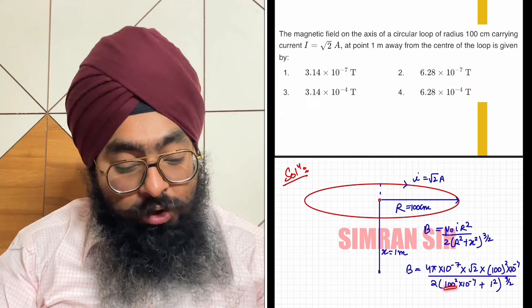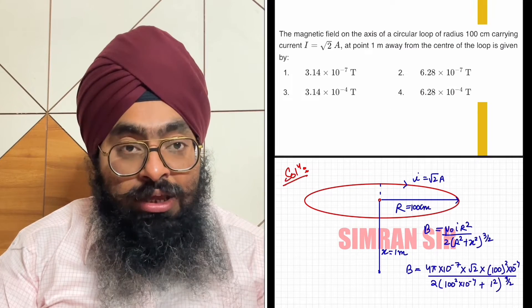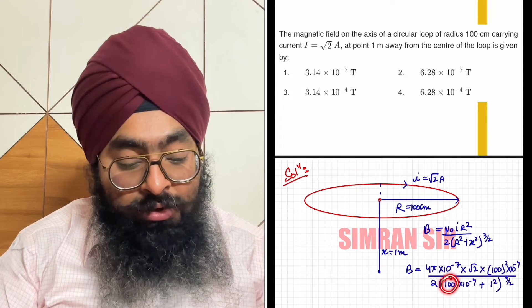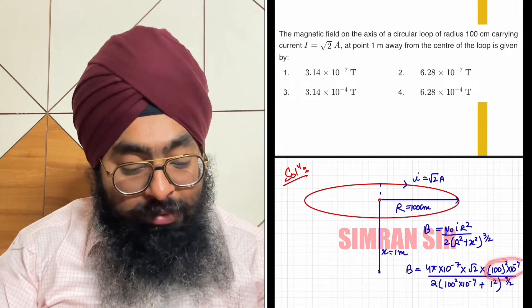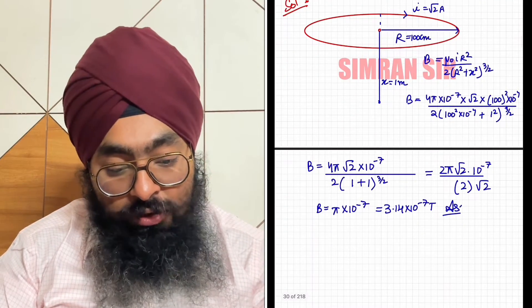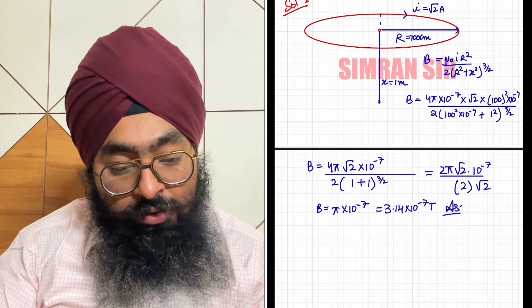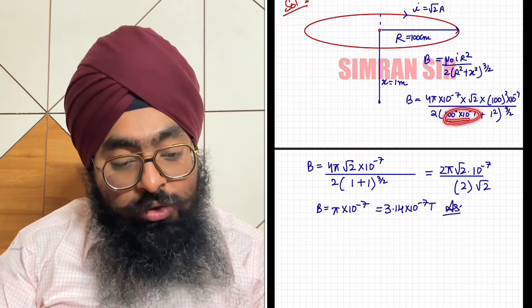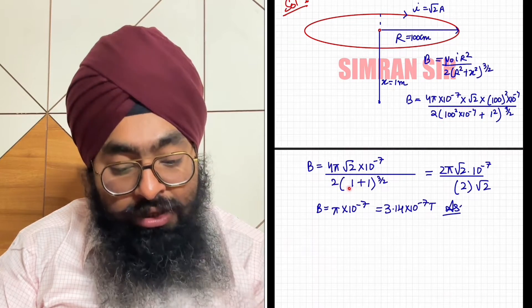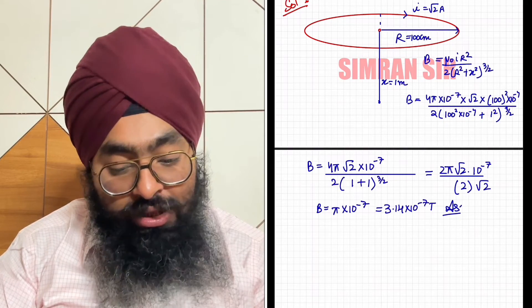That is 3 by 2. Solving this, 100 square can be written as 10^4. 10^4 into 10^(-4) becomes 1. Same here, this also becomes 1. So what do we get after solving? The numerator becomes 1, with root 2 remaining. This becomes 1 square, which is 1, and this is already 1. So 1 plus 1 gives you 2 here.